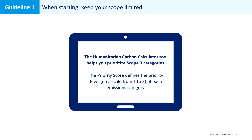There are a few ways the tool can help you with this first guideline. When it comes to the emissions scope, the tool can help you prioritize the different emissions categories. You know scope 1 and scope 2 are mandatory, but for scope 3, it can help you set your priorities. In the tool you'll find something called a priority score, which defines the priority on a scale of 1 to 3 of the different emissions categories. This priority score was defined when the tool was developed, with input from different humanitarian organizations as well as carbon accounting experts.